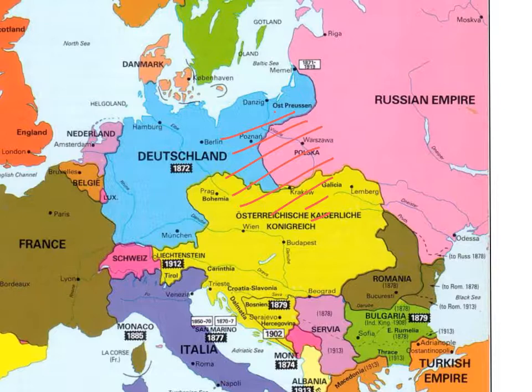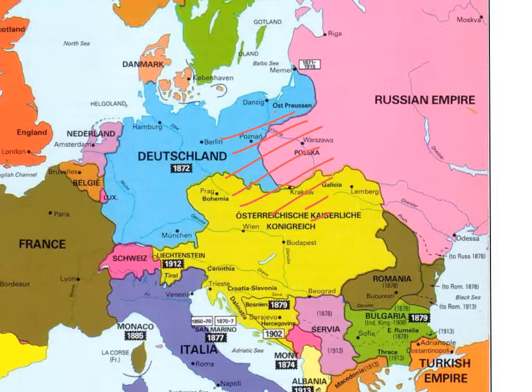Germany, which came into existence in 1871, was also an empire — not just Germans lived there; there were French, Danes, Poles and others. So Europe was dominated by empires ruled by emperors. These three huge empires came together in 1872 to 1873 as a result of an initiative by Bismarck, who formed the League of the Three Emperors. Why did he do this? There were three reasons.